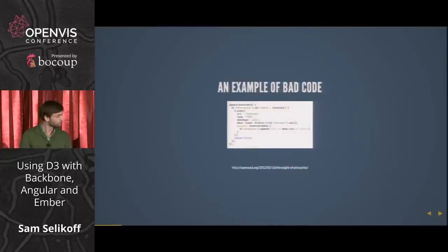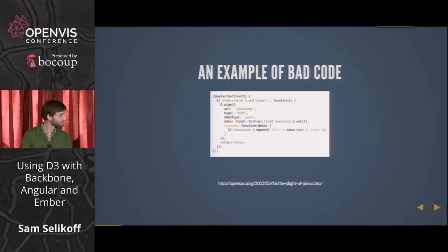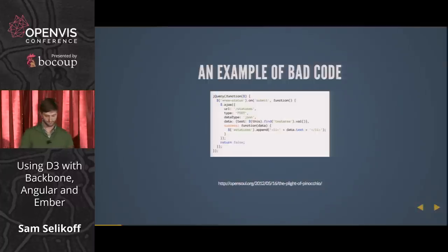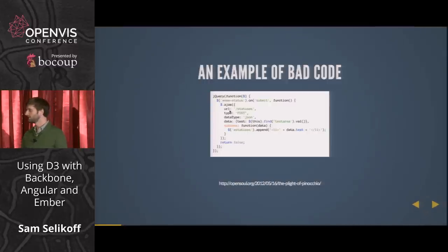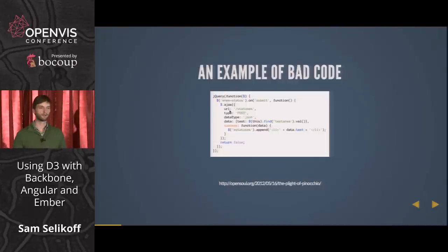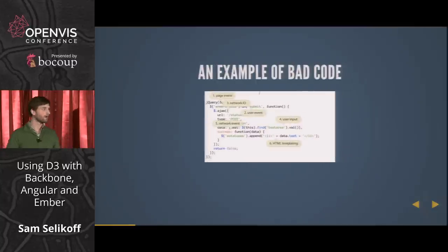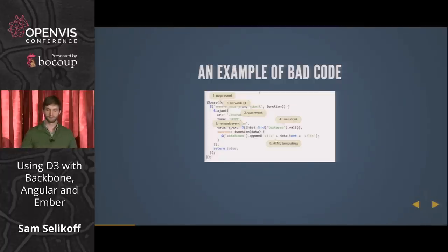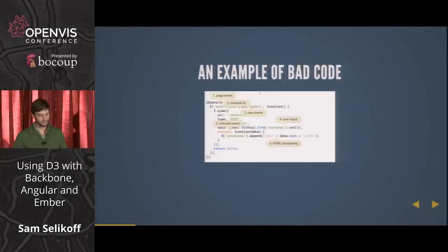I think we could all agree that this is an example of bad code. This is just some jQuery that is doing a lot of different things. I'm definitely guilty of writing code like this, especially when I was starting out. This is adapted from a talk by Brandon Keepers from GitHub. Why would we say this is bad? There are a lot of concerns being mixed here: a page event, network I/O, a user event, user input, another network event, and HTML templating. This code mixes concerns.